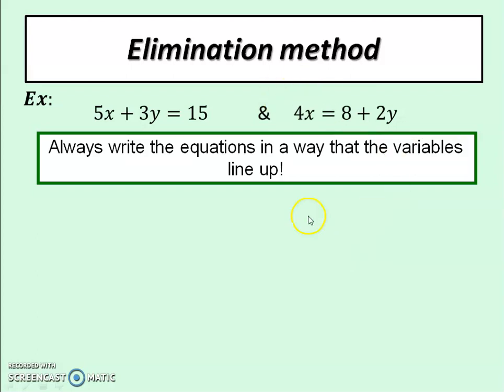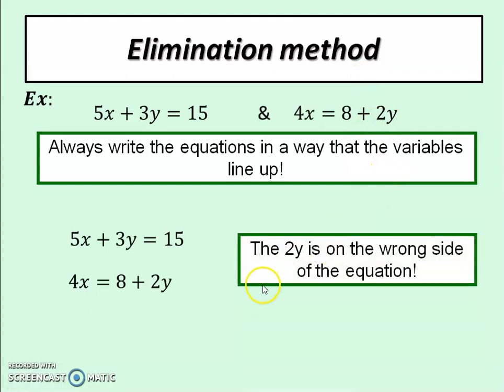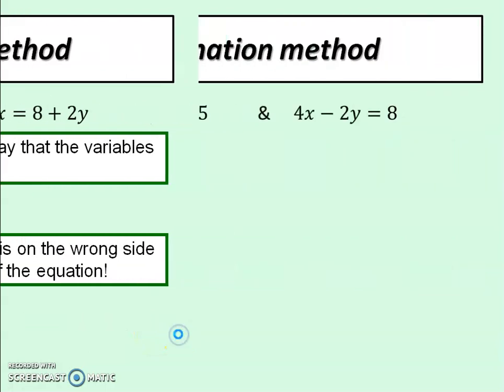First step is to make sure that the variables are lined up, that the x's and y's are on the same relative side of the equal sign. In this case they aren't yet. The x's are both on the left-hand side, the constants are both on the right-hand side, but this y term is on the left and this y term is on the right. So how do we fix that? We've got to move one of them. What I did from here to here was just take this 2y and move it to the other side of the equation like that. Now the variables are lined up.